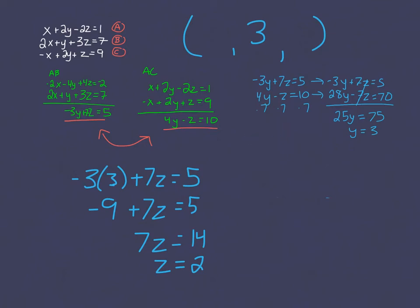I moved my work so that I would have more work space, and I chose the first equation, negative three Y plus seven Z equals five, to substitute the value Y equals three in, and I found that Z equals two.